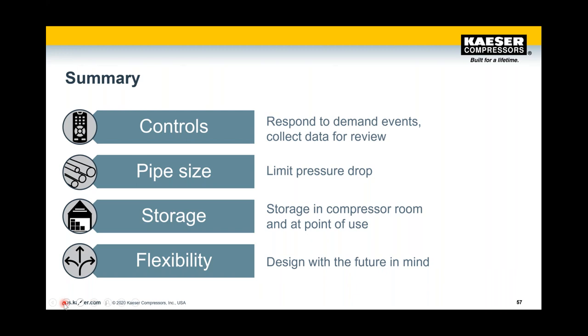In summary: controls — whether individual or master — maintain compressor operations safely and respond to demand events, providing a wealth of information. Piping: limit pressure drop and minimize velocities. Storage in the compressor room provides a control buffer, preserving longevity and delivering energy savings, including permissive starts so you're ready if you lose a compressor. Storage at the point of use eliminates noise back into the system and maintains smooth operation so that production is unaffected. And finally, flexibility — design with the future in mind. Now we'll go back to Kimberly and finish with our Q&A.